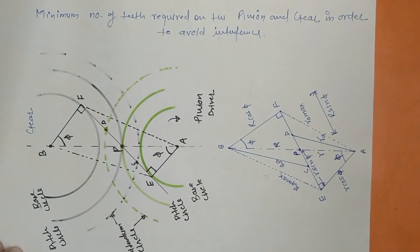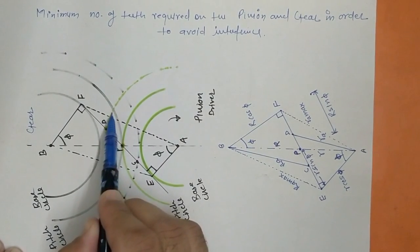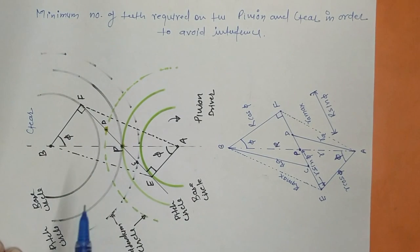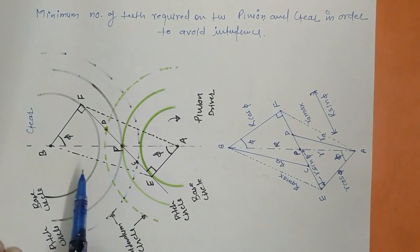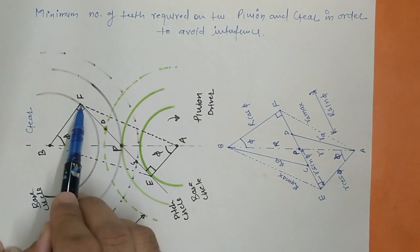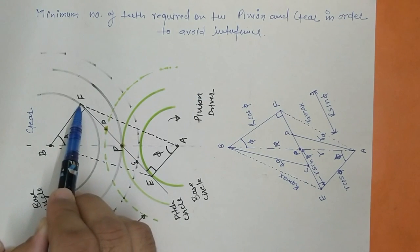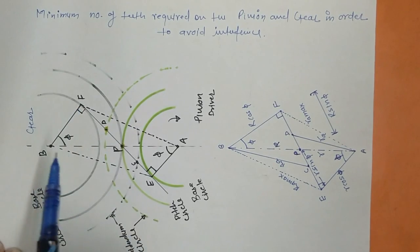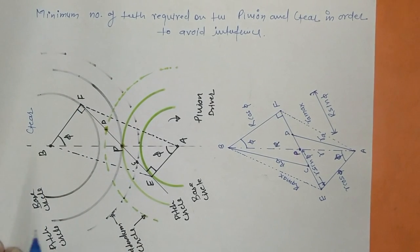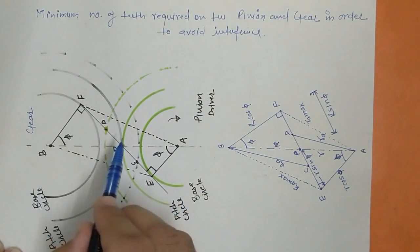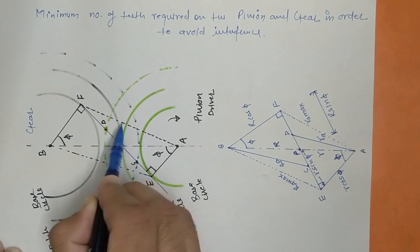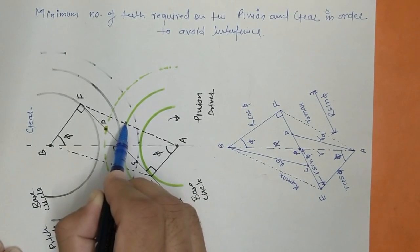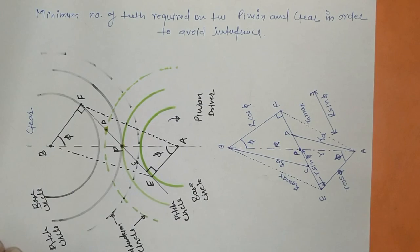The reason for interference is that if we keep on increasing the addendum circle beyond point F, there would be an interaction between the involute and non-involute profile of the gears. Non-involute profile means the involute profile of the pinion will interact with the fillet part of the gear, causing undercutting. This undercutting phenomenon is known as interference. To be on the safe side, the maximum addendum of the pinion can only extend from the pitch circle up to this point.